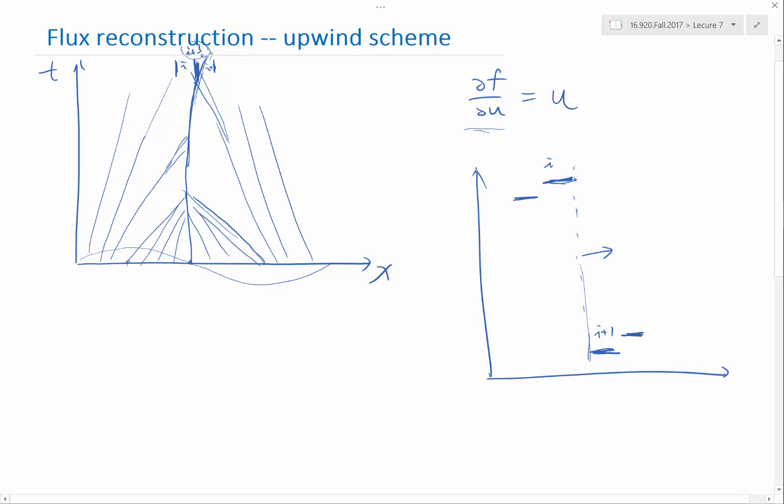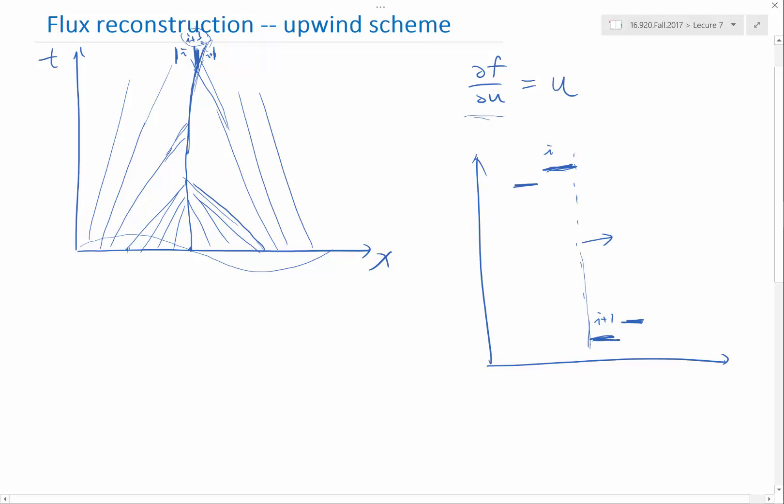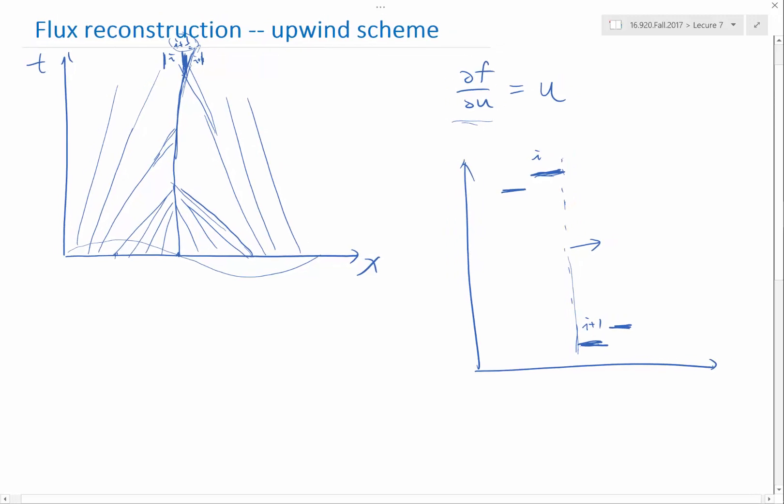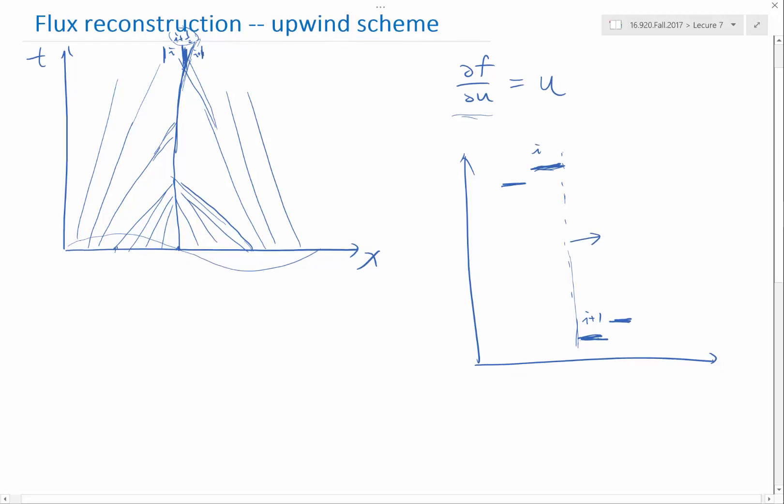So here let's stick to the first order upwind scheme. The upwind scheme looks at the speed of the shockwave, and I hope somebody still remembers how do I compute the speed of the shockwave. Yes, delta F by delta U.